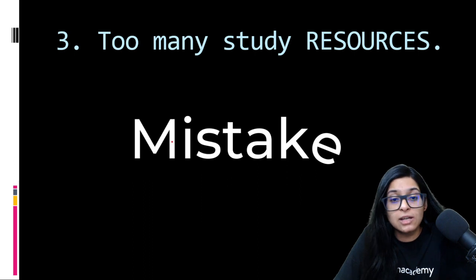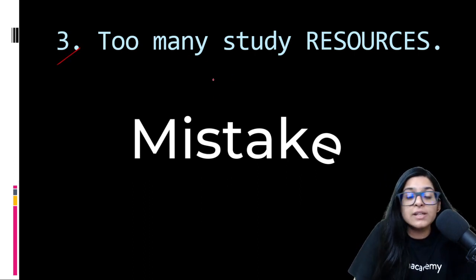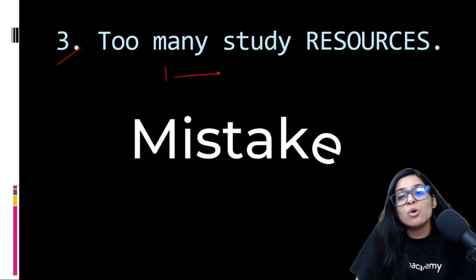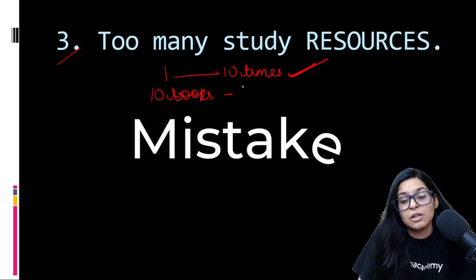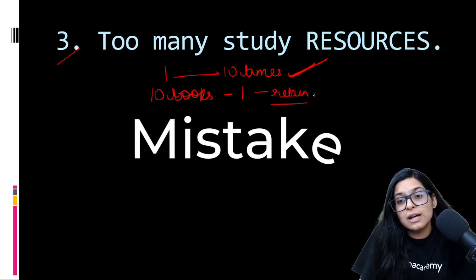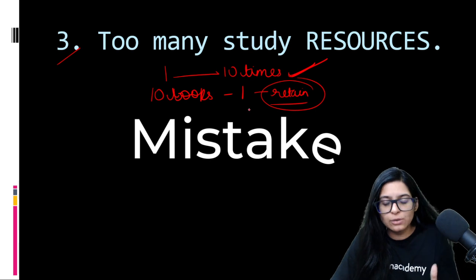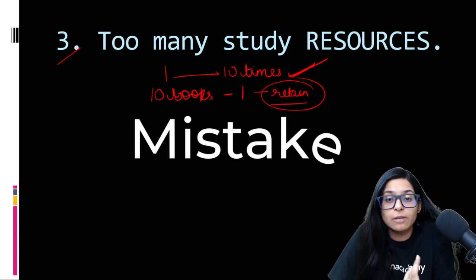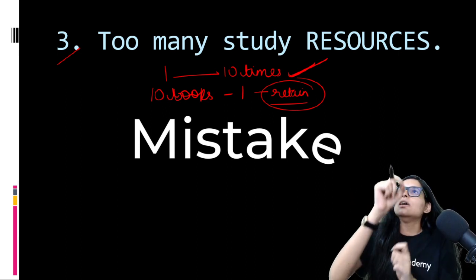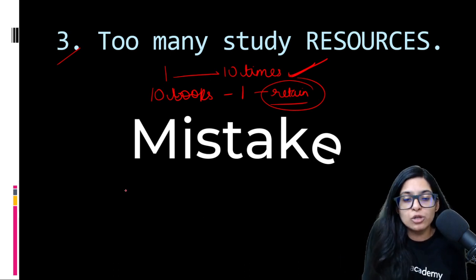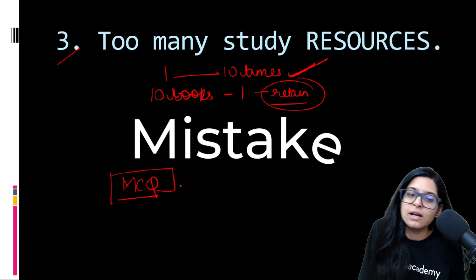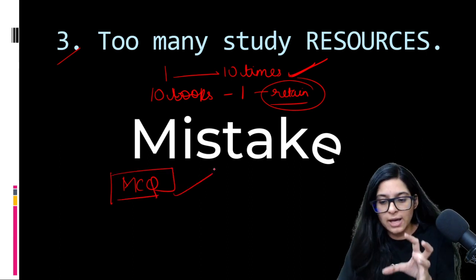Third: too many study resources. Now this is a very major point. I always tell my students that it is very, very much appreciable to read one book ten times. One book read ten times is far, far, far more better than ten books you are reading one time, because you don't retain it. When you read one book multiple times, you can see the image, you remember it was written on that page. So one book read three times. But when you talk about MCQs, then you will solve more and more MCQs from different books - that is great. But theory, you have to read from one book.